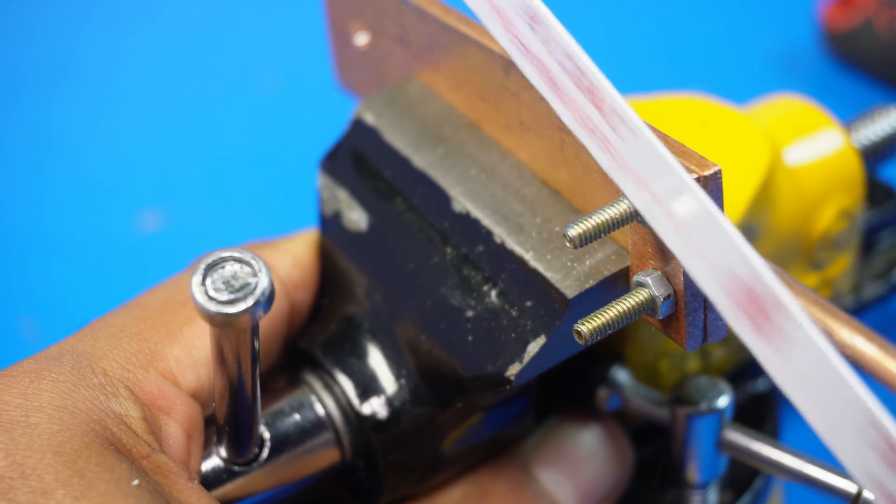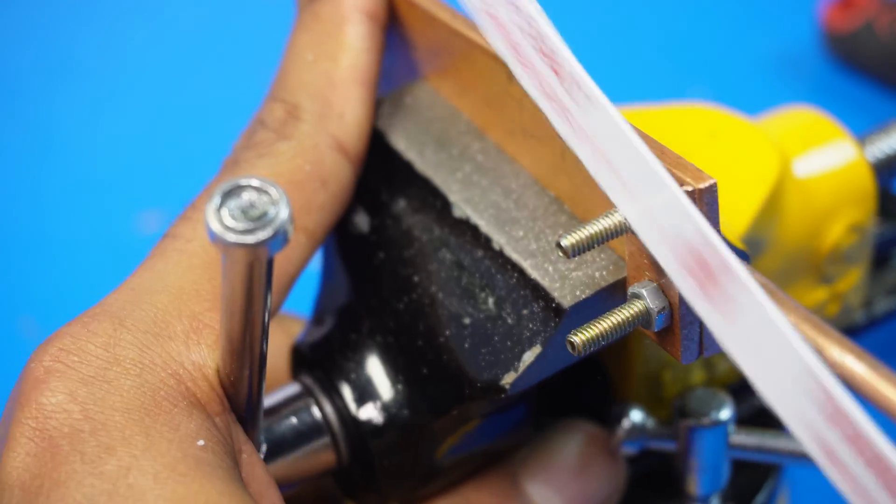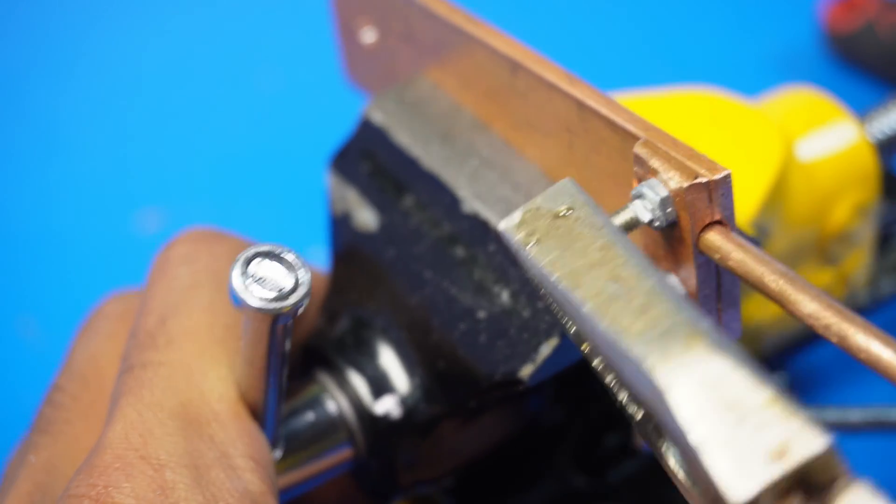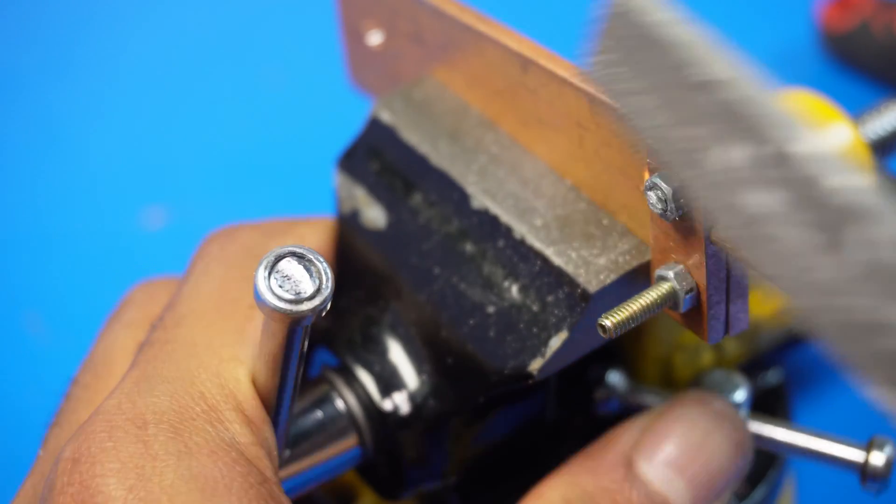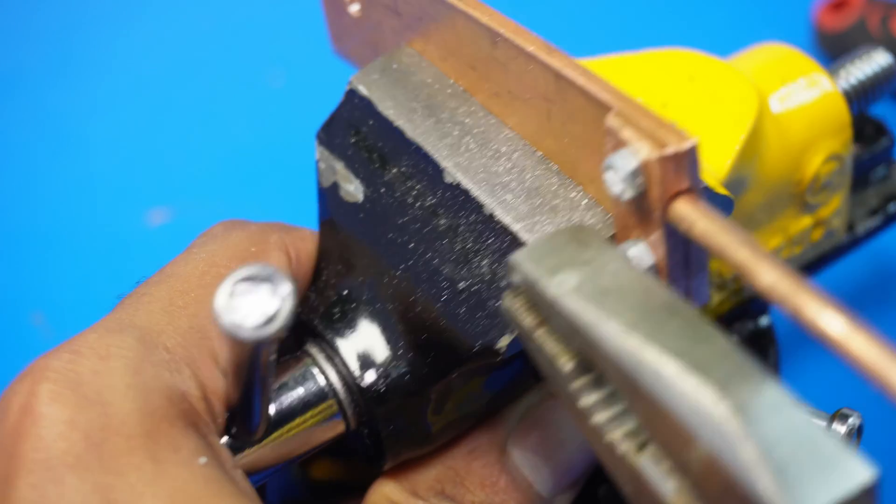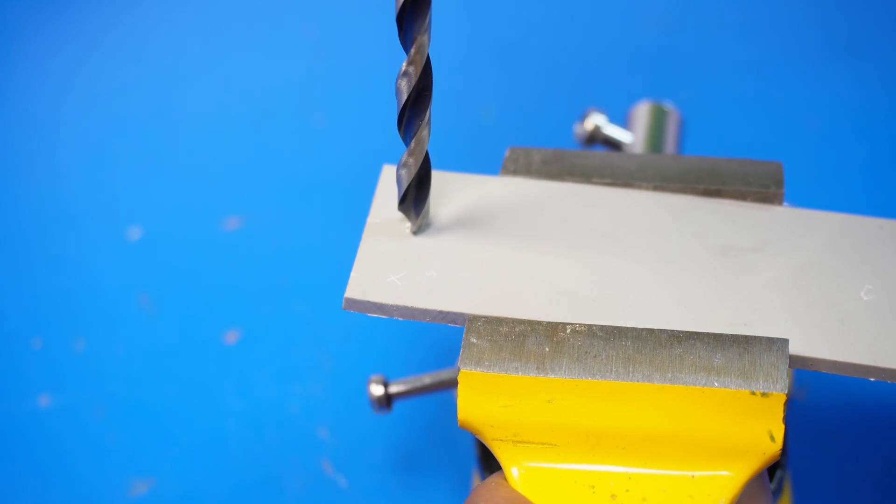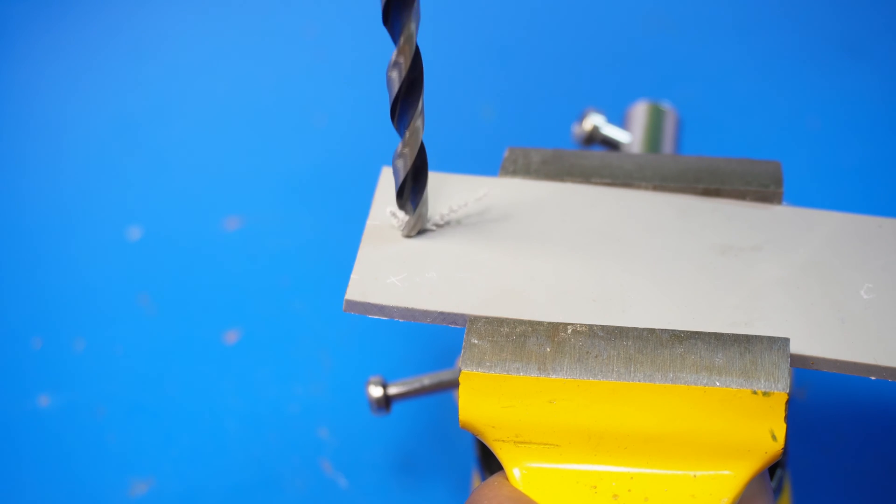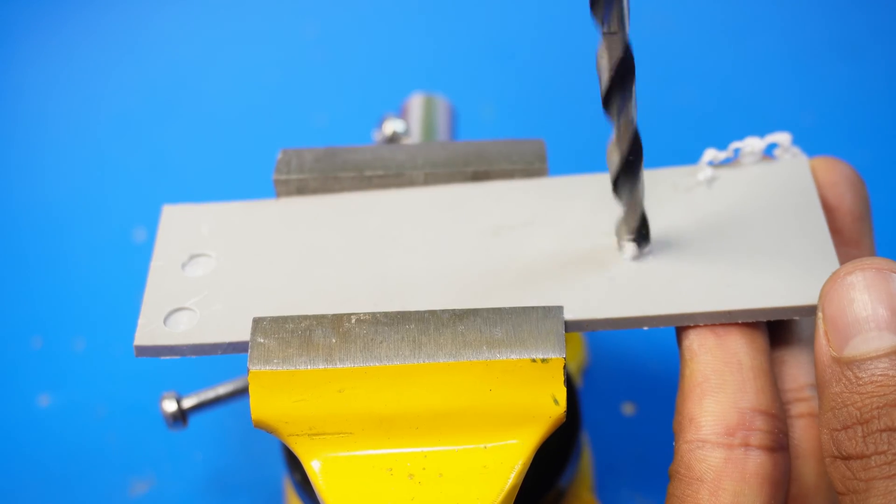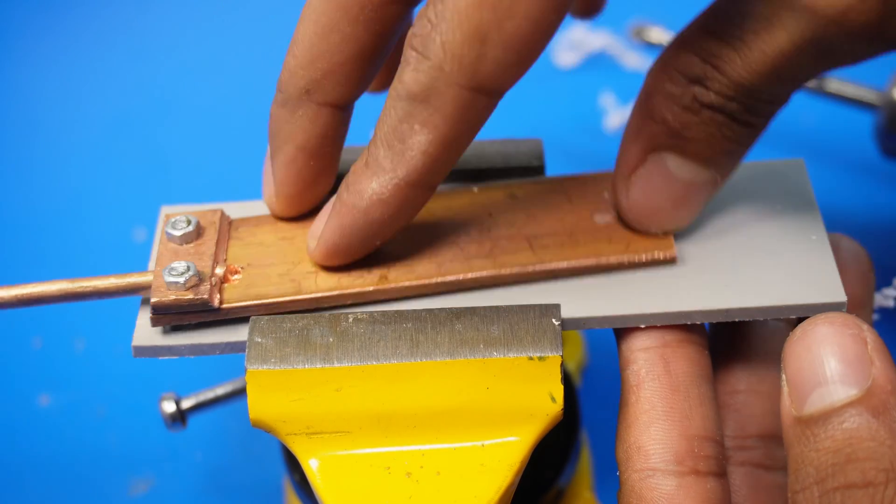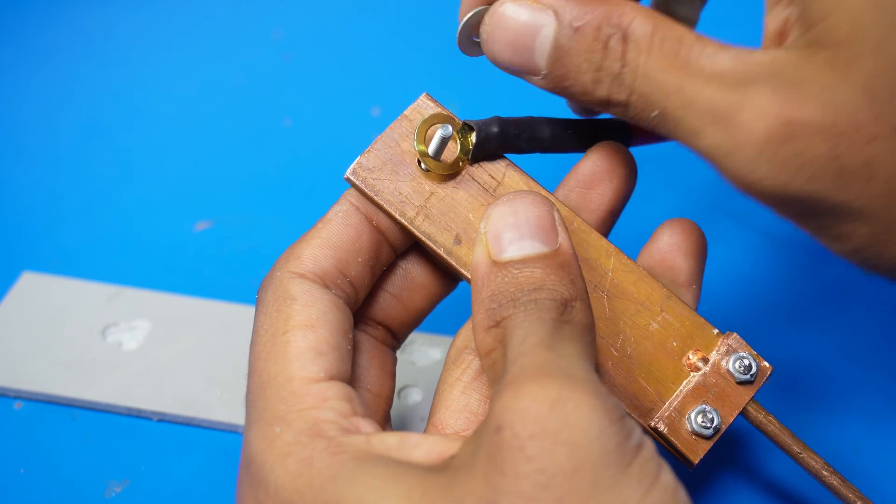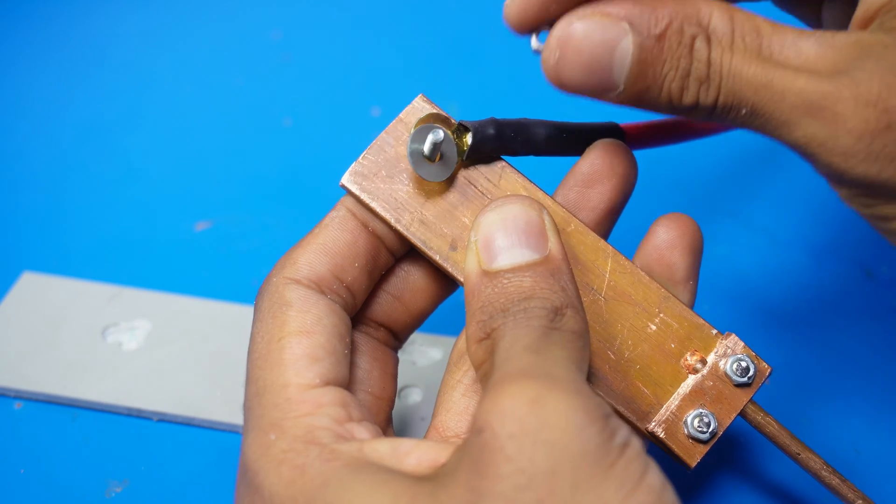I cut off the extra screws that were protruding from the copper strip. Next, I took a PVC sheet and made markings so the nuts and screws could fit in. I joined the wires to the copper strip using screws and nuts, then removed any excess material.